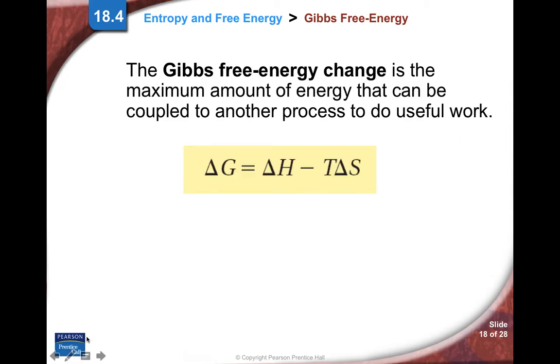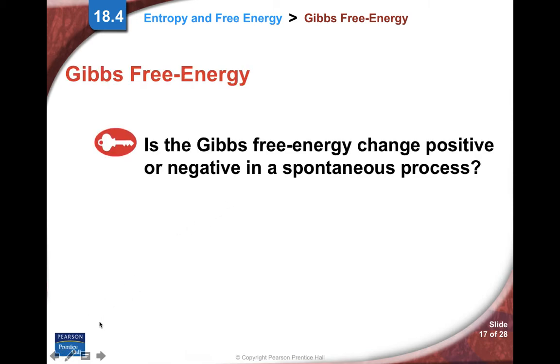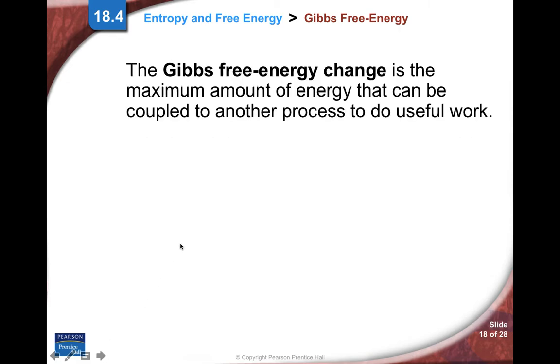Delta G negative for spontaneous process. That's really important for you to remember. It's the maximum amount of energy that can be coupled to another process to do useful work.